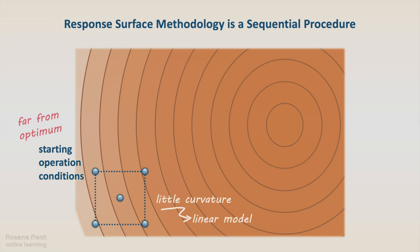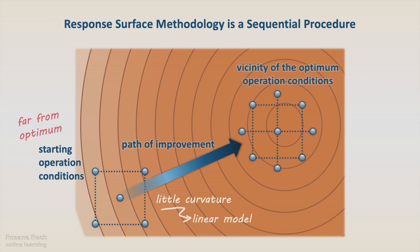Although the linear model does not show the maximum response, it shows the path of improvement that, if followed, can drive the experiment to the vicinity of the optimal operation conditions.